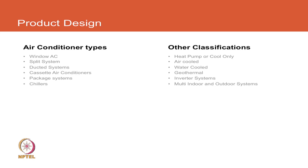Package systems are complete units which have the compressor, evaporator, condenser, and all the controls housed in one single body. They could be rooftop units, units used for telecom applications, units used for computer room cooling — everything is together, and that is why we call it a package. And then we have chillers.